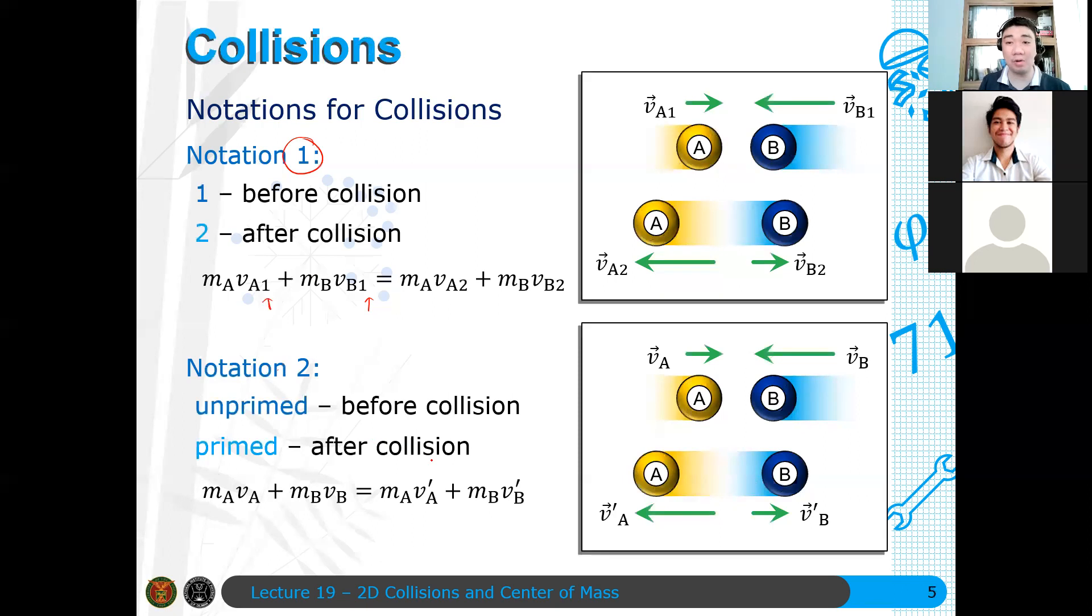But it's difficult to extend notation 2 for multiple states because you'll have many primes. If you have five states, you'll have five primes, which gets confusing. If you lose one prime, you'll be confused. So it's not effective for more than 2 states. If you have more than 2 states, we will revert to the first notation. Otherwise, our default notation for these discussions is notation 2.